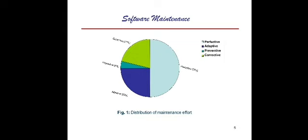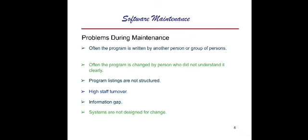In this pie chart showing the distribution of maintenance effort, most of the effort is contributed towards perfective maintenance. Twenty-one percent of the maintenance effort is applied to corrective, four percent is for preventive, and twenty-five percent is for adaptive maintenance.